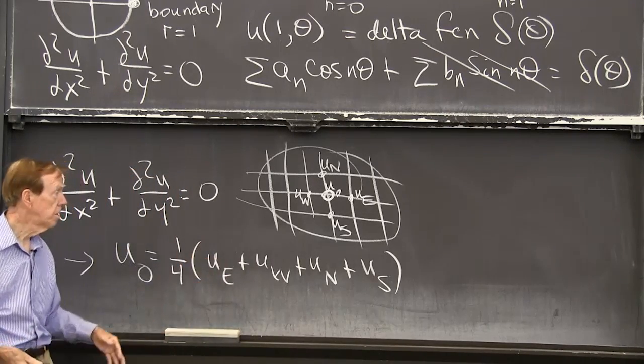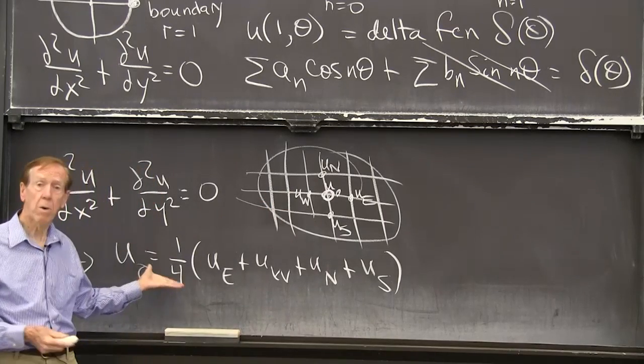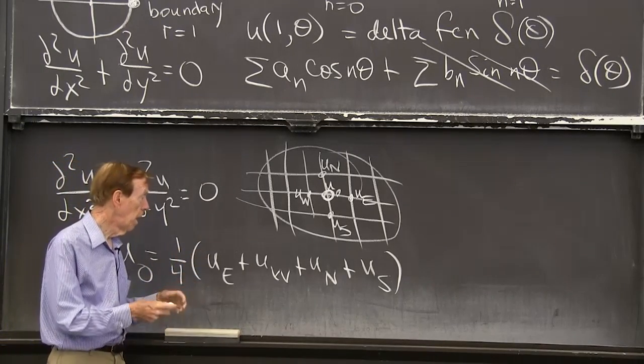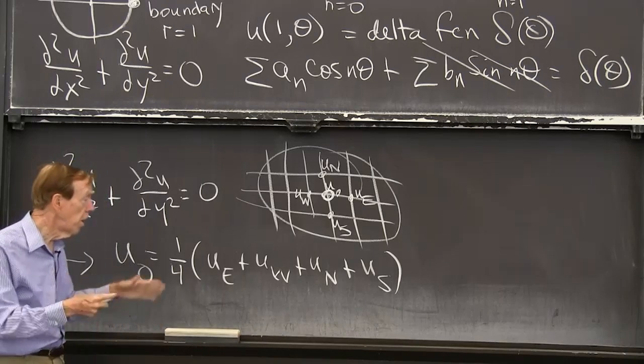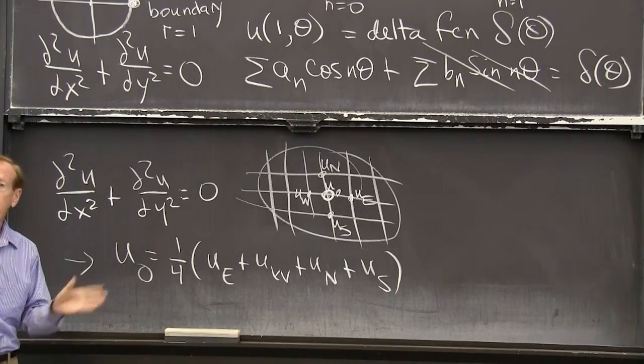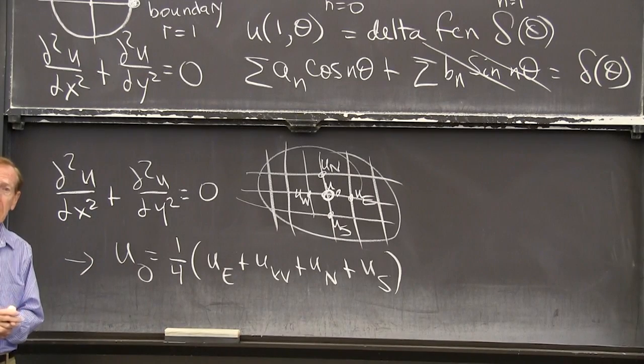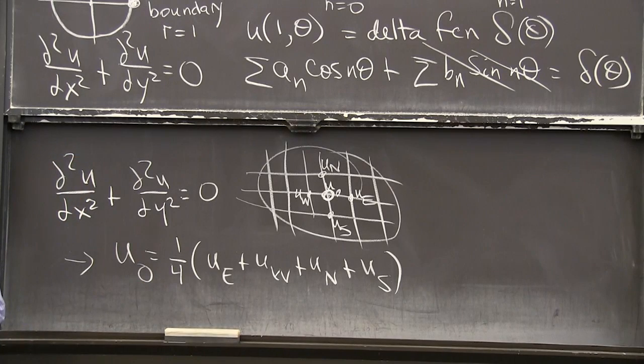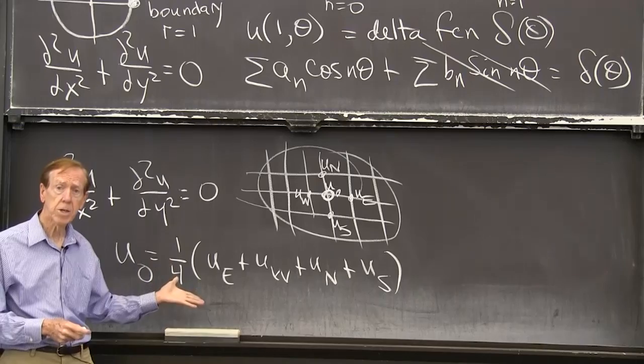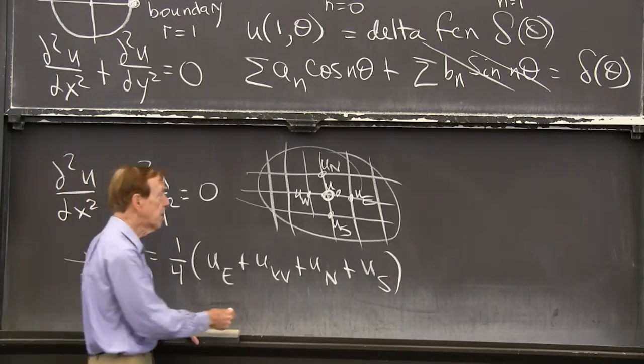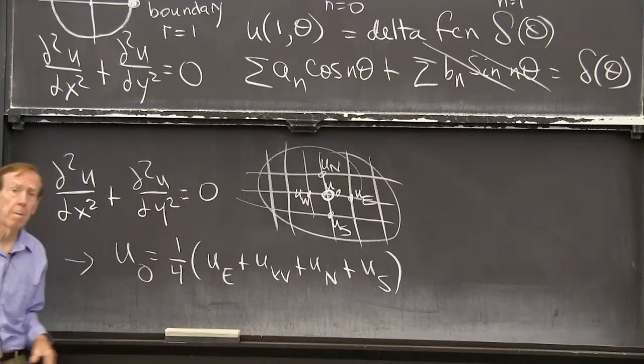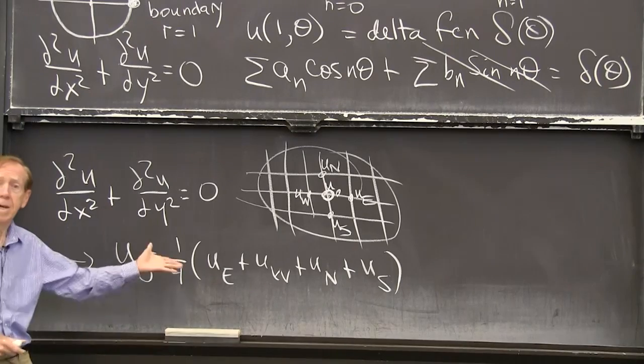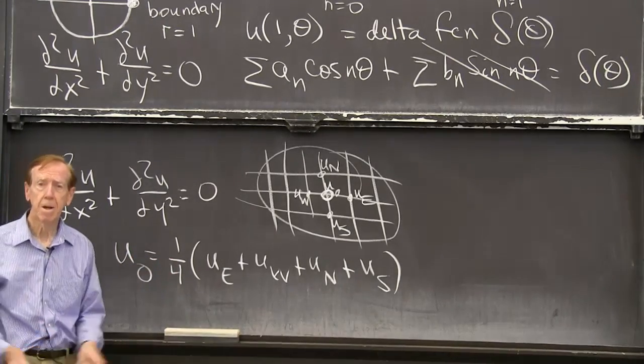The unknowns are all these u's. The u's at all the mesh points. And I have an equation at every mesh point. So I have the same number of equations from the mesh points as unknowns at the mesh points. I solve that big system. And that gives me a solution u, an approximate solution u, to Laplace's equation. So this would be called Laplace's difference equation, or Laplace's five point scheme, because it uses five points in that average. OK, that's an important problem in numerical analysis. Thank you.